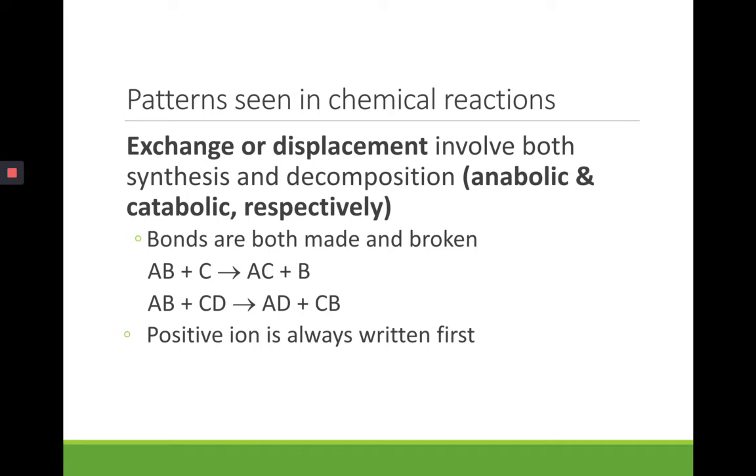Some other patterns that we'll see in chemical reactions are exchange or displacement reactions. This is basically a reaction where we're going to sort things around. So you can see that bonds are made and broken in the two examples. In that first example, we have AB become AC, and we're breaking the bond between AB, and so B is going to be separate as a product.